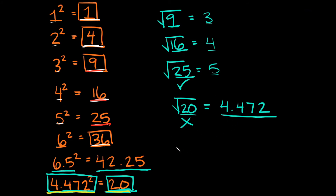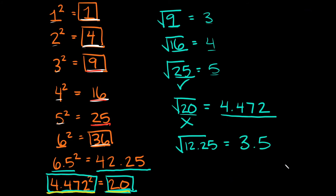One other example: let's say we took the square root of 12.25. If you plugged this into a calculator, your answer would be 3.5. So is 3.5 a whole number? No, it is not. So that means the number inside the radical, 12.25, is not a perfect square either.